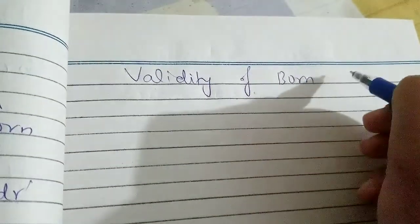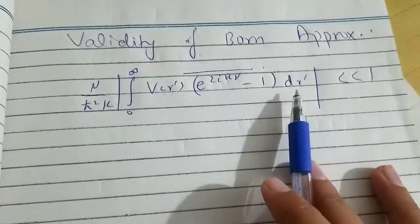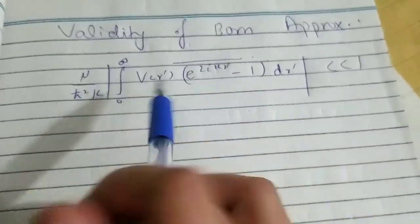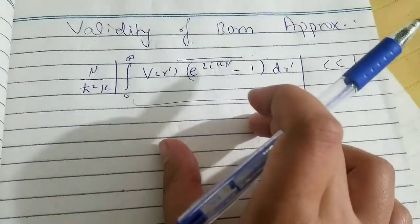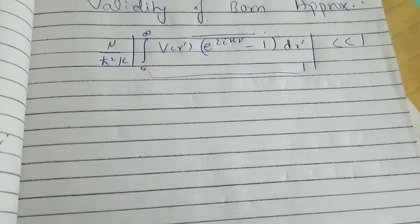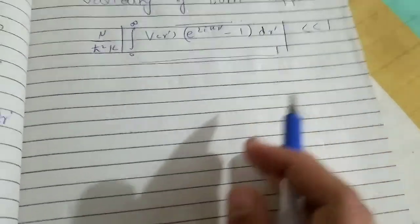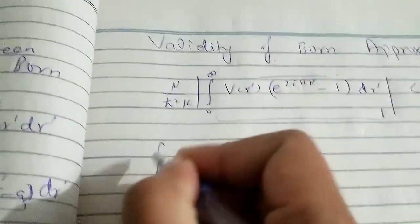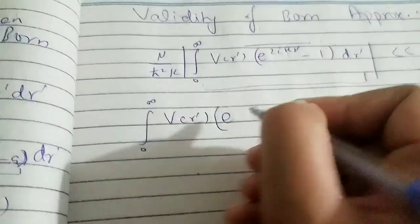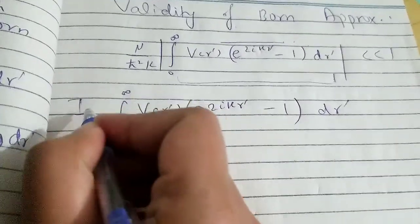The condition that establishes the validity of the Born approximation requires evaluating a specific integral. We need to put in the potential value and then simplify to get the condition. To keep things clean, let's call this integral I and evaluate it separately.